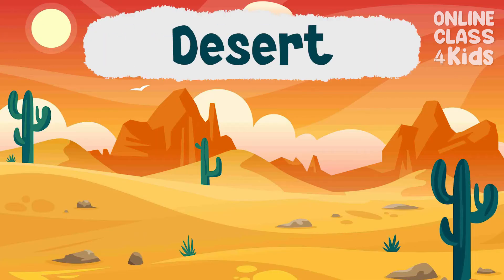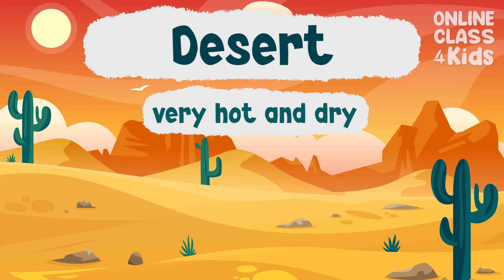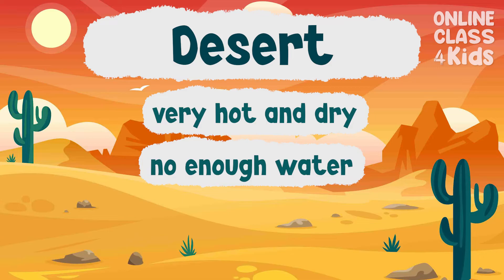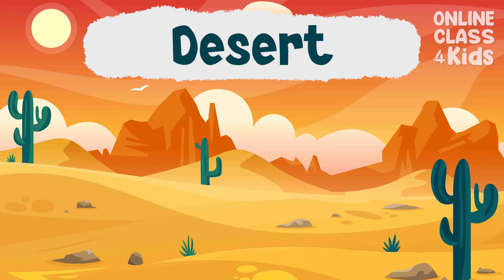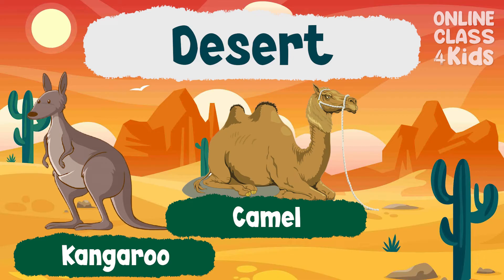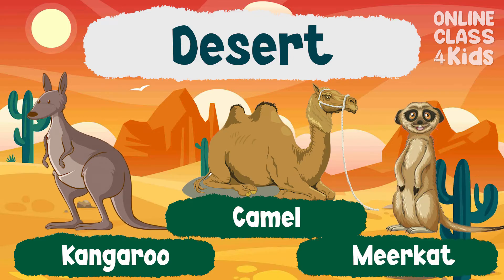Desert habitats are very hot and dry, and don't have a lot of water. Animals living in desert habitats can survive without water for long periods of time. Famous deserts can be found in Africa, North America, and Australia. Kangaroos, camels, and meerkats live in the desert.